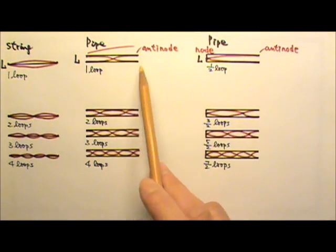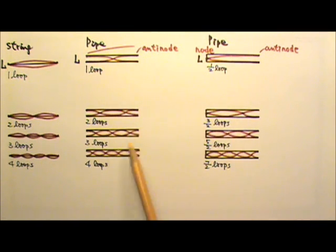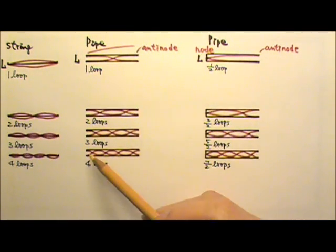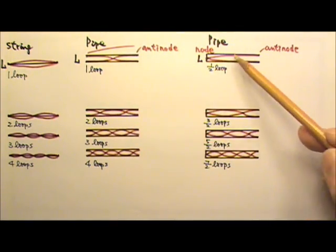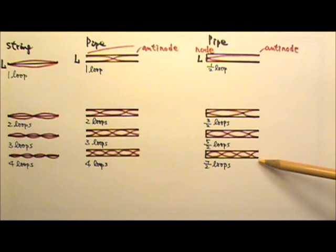So if we draw standing waves that will fit into these pipes, they look like these. For these ones, I have to have anti-node, anti-node. For these ones, I have to have nodes and anti-node.